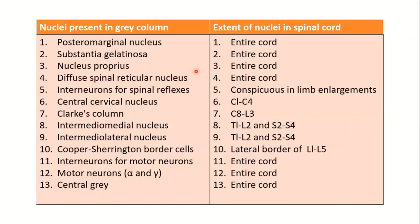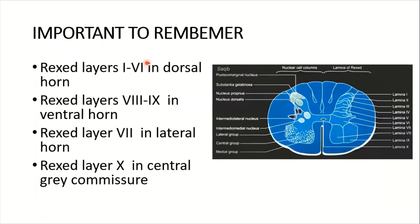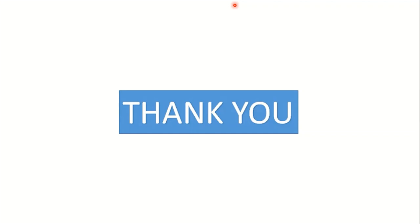This concludes the discussion of the internal structure of the spinal cord, covering the cross-sectional anatomy, the three horns and their nuclei, and the ten Rexed laminae. The next video will cover the white matter structure and the characterization of spinal cord levels. Please subscribe to the channel, press the bell icon, and comment below for feedback.